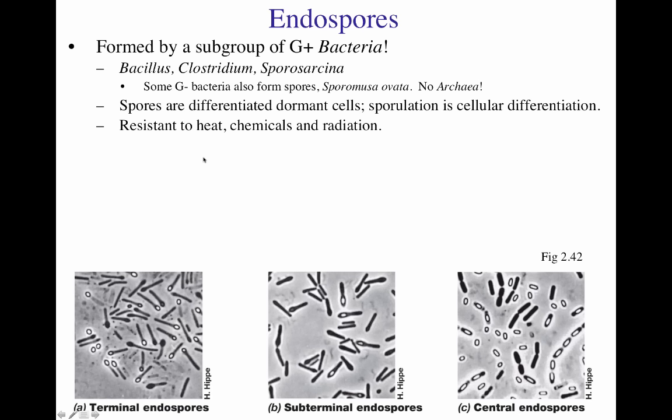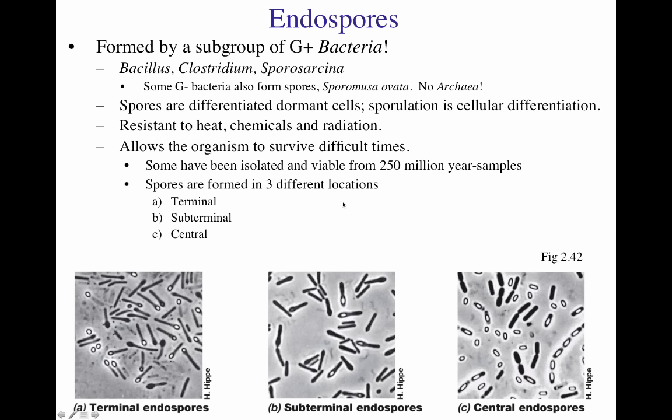Spores are resistant to many of the damages that can come from heat, chemicals like acids, and radiation, giving the spore protection when the going gets tough. This allows the microorganism to survive difficult times. Interestingly, some spores have been isolated from mummies which are 250 million years old, and when triggered, those spores have been able to germinate and become viable vegetative cells.